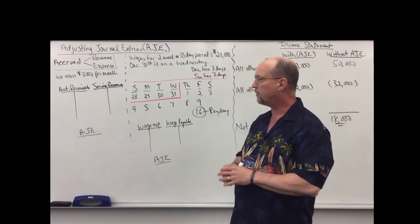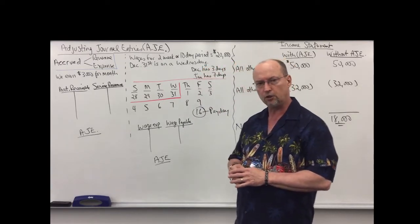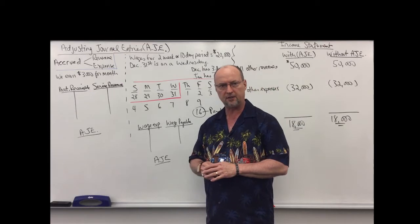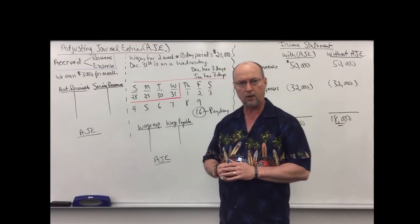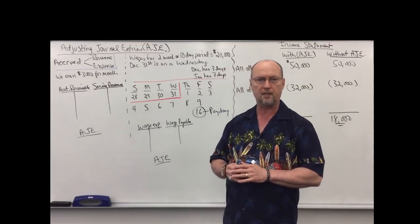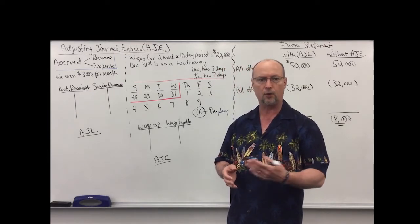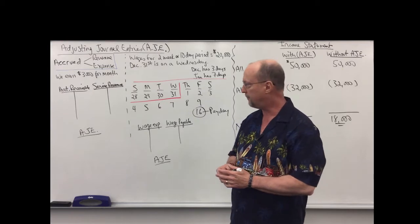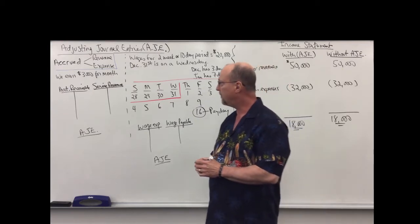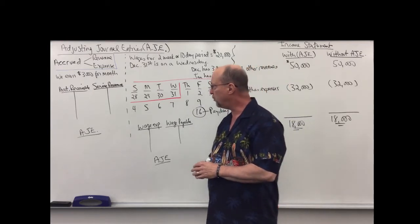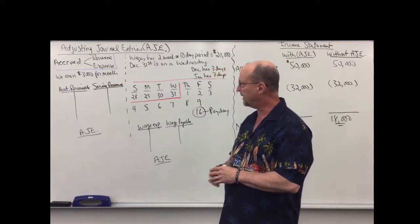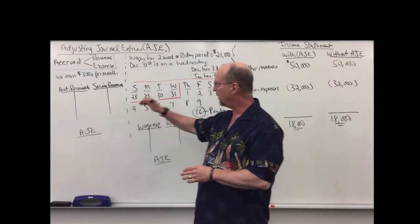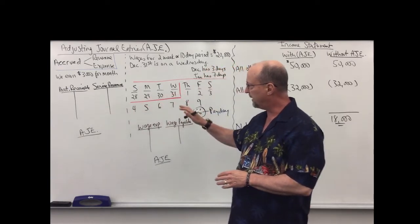We have to record adjusting journal entries to make sure revenues and expenses are recorded in the proper time period. GAAP requires this. We're going to look at two examples: one example of accrued revenue and one example of accrued expense.